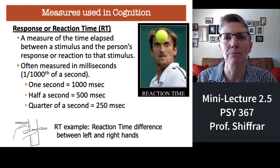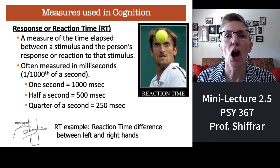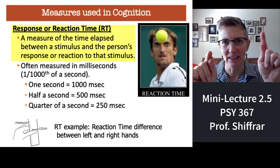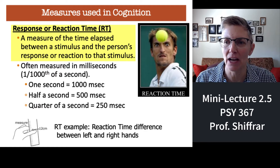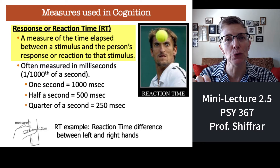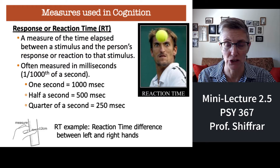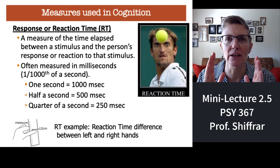The first slide shows a discussion of reaction times. Remember we talked about reaction times when we discussed Donder's famous study. A reaction time is the amount of time between the onset of a stimulus — when it first appears — and when the person reacts to it. It's that gap in time: how long it takes you to react to a stimulus, not how long it takes you to detect it, but how long it takes you to react to that detection.